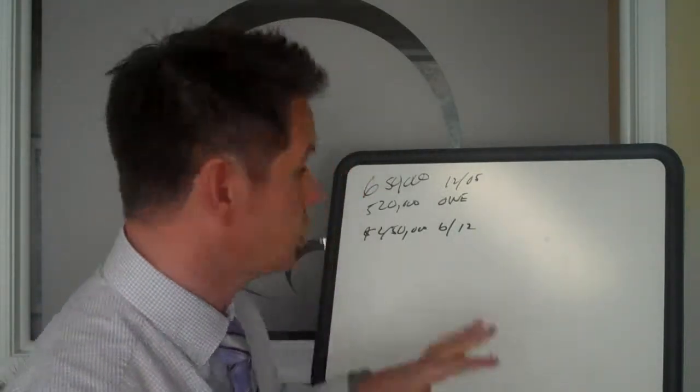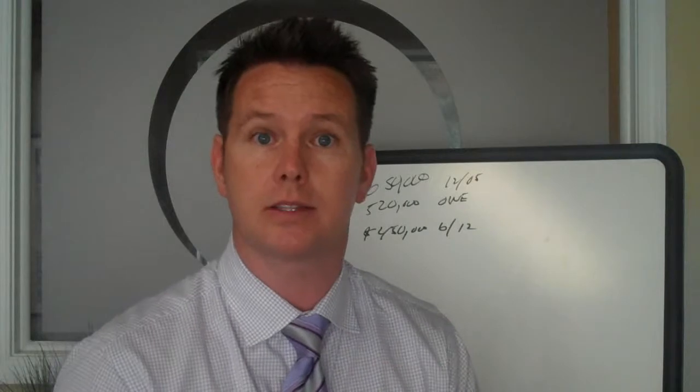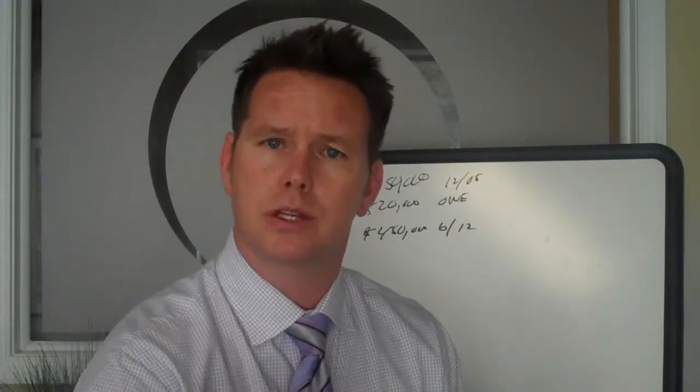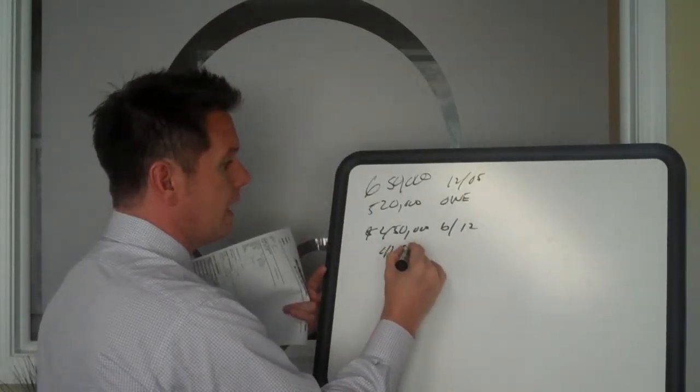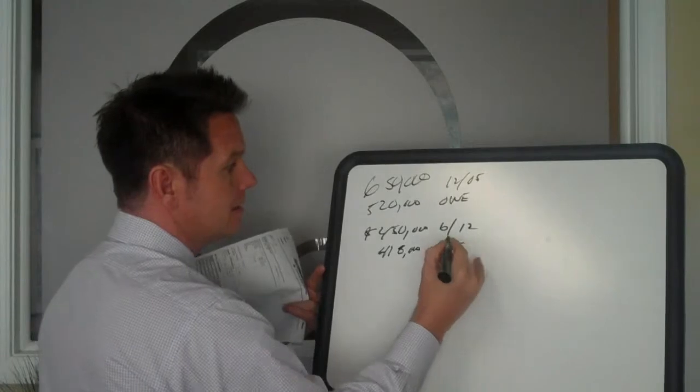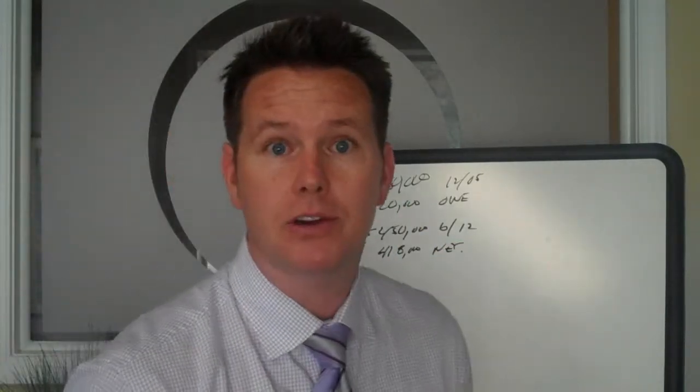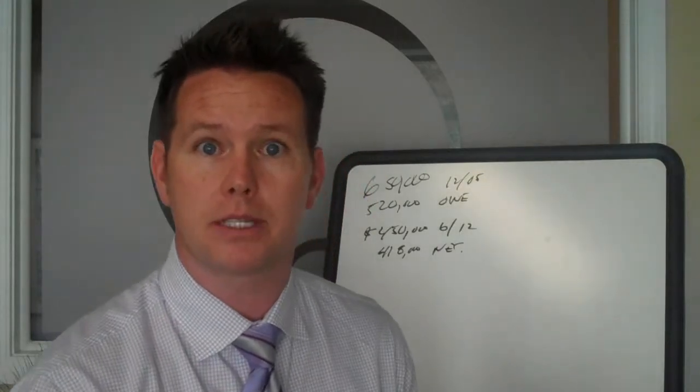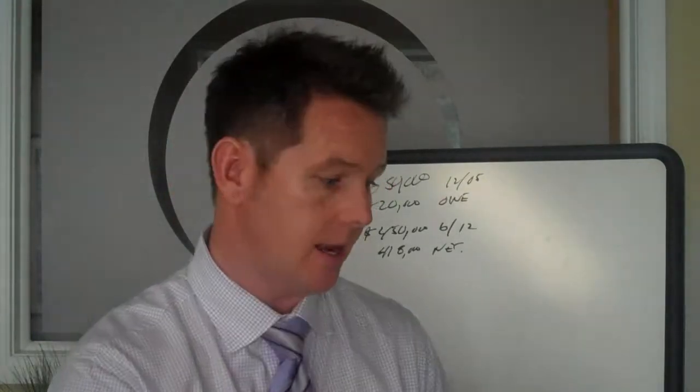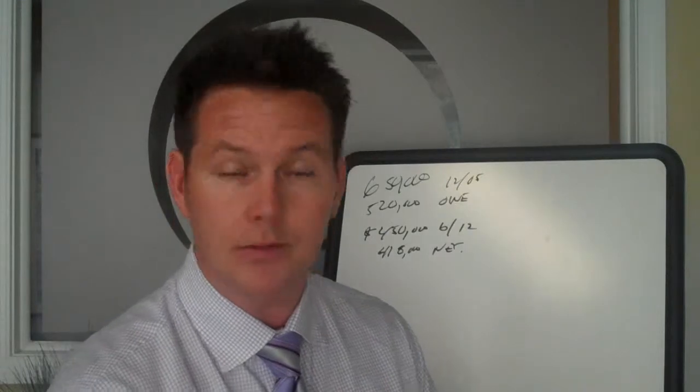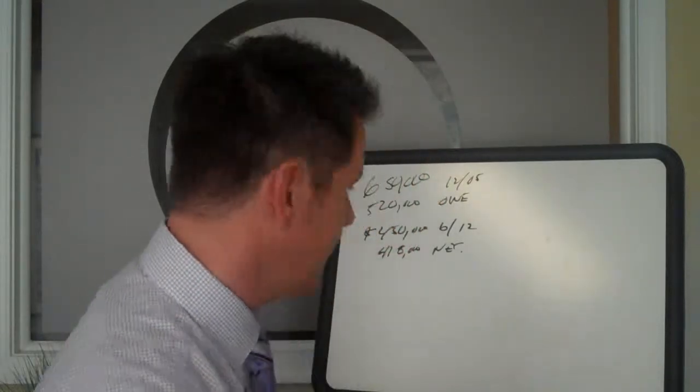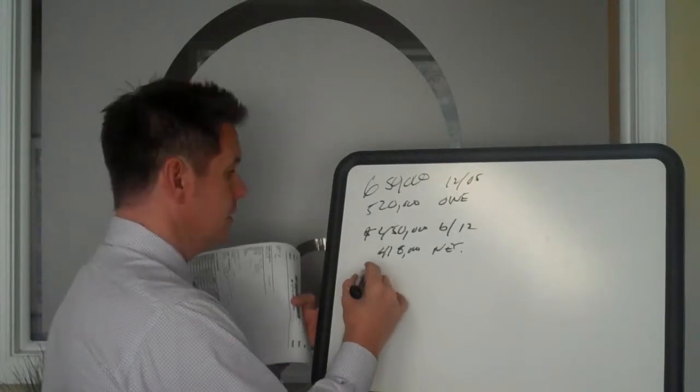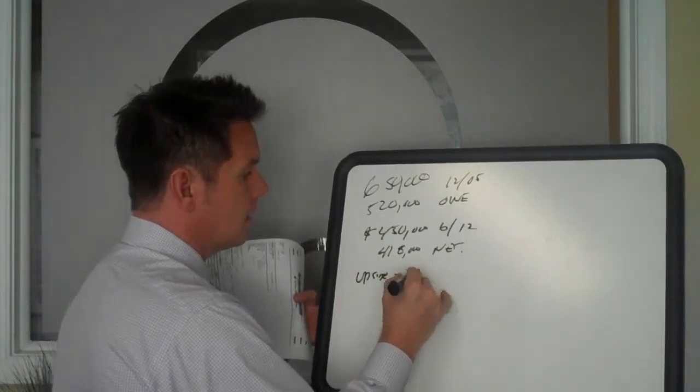Now, if they sold it right here for $450,000, let's say they decide to sell it today for $450,000 after commission, real estate, transfer tax, all the nitty gritty, net is $418,000. Well, they owe right now $520,000. So they would be upside down or they'd need to bring money to the table of $101,000. So basically, they're upside down $100,000.